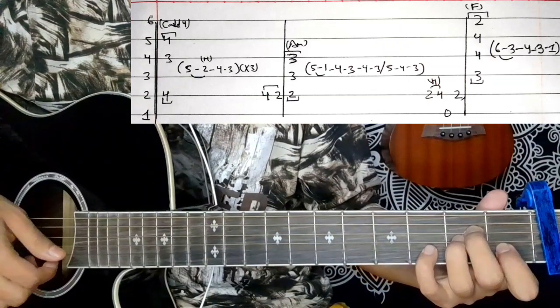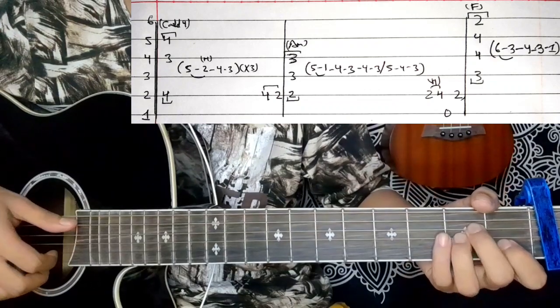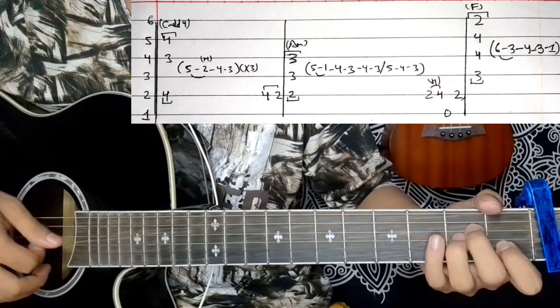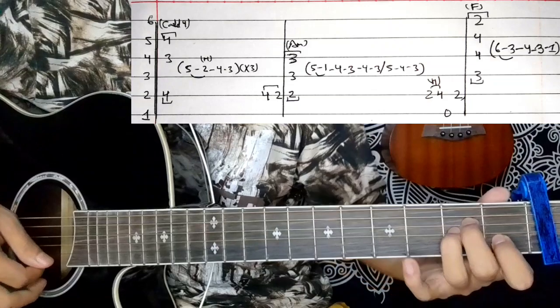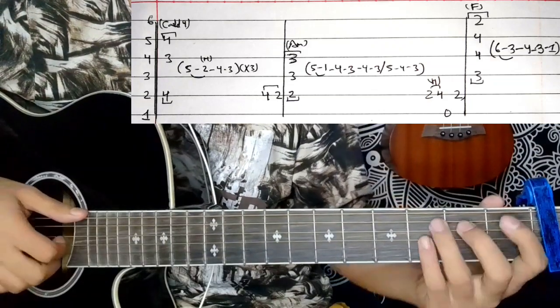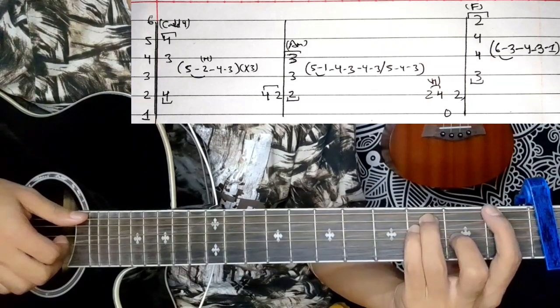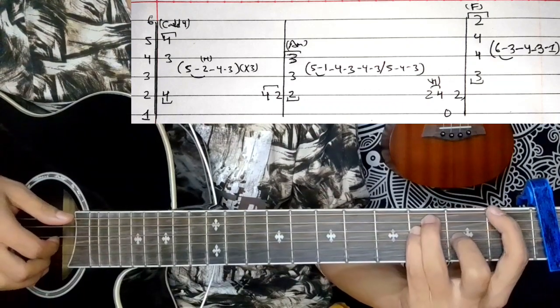The second string, second fret - that's on the A minor. Now we go to F major chord. For the bar chord, pick on strings six and three.